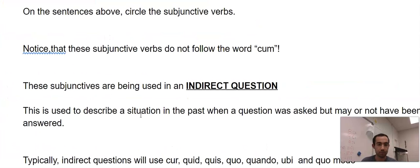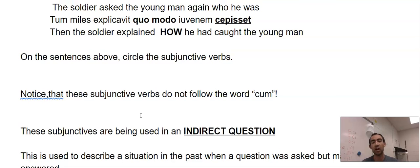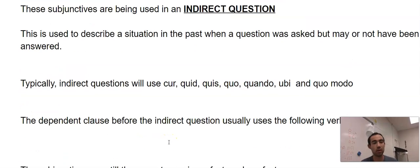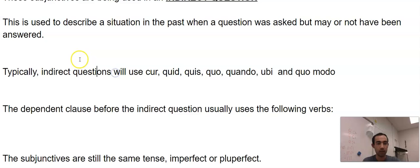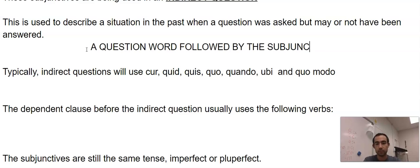So for example, how he had caught the young man. You're explaining how. It's a question word but without a question mark at the end and a subjunctive. That's pretty much what it is. A nice easy way to remember: a question word followed by the subjunctive without a question mark.